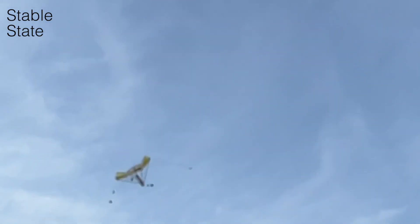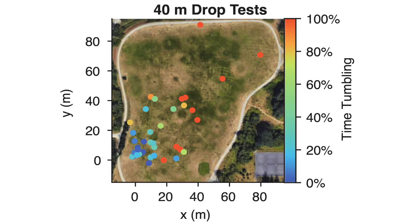They can also transmit sensor data wirelessly as they descend to monitor how temperature, lighting conditions, or other environmental factors vary across the atmosphere.